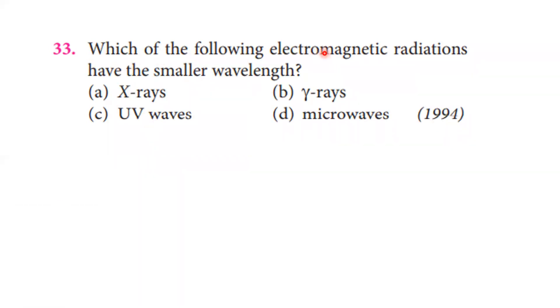Which of the following electromagnetic radiations has the smallest wavelength? The smallest wavelength corresponds to the highest frequency. Among the options given, gamma rays have the smallest wavelength in the electromagnetic spectrum.